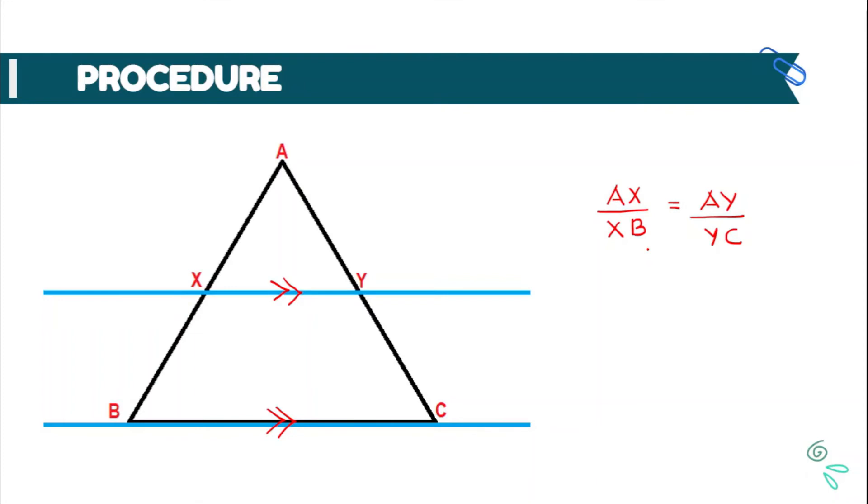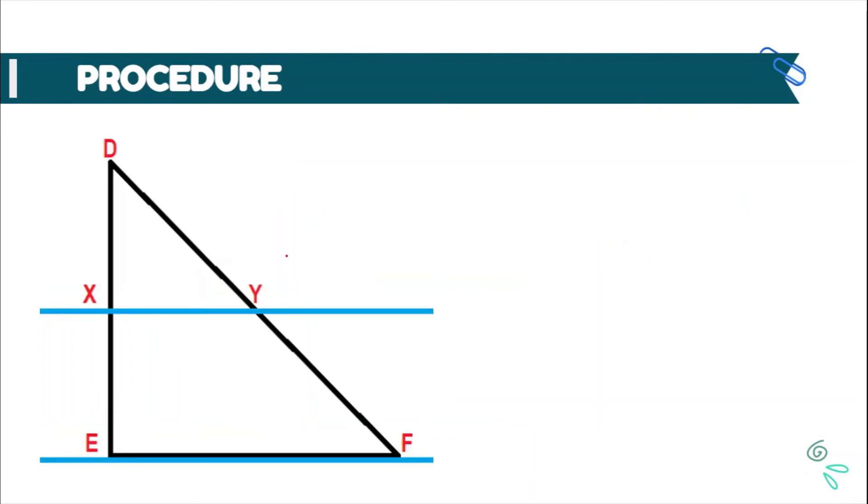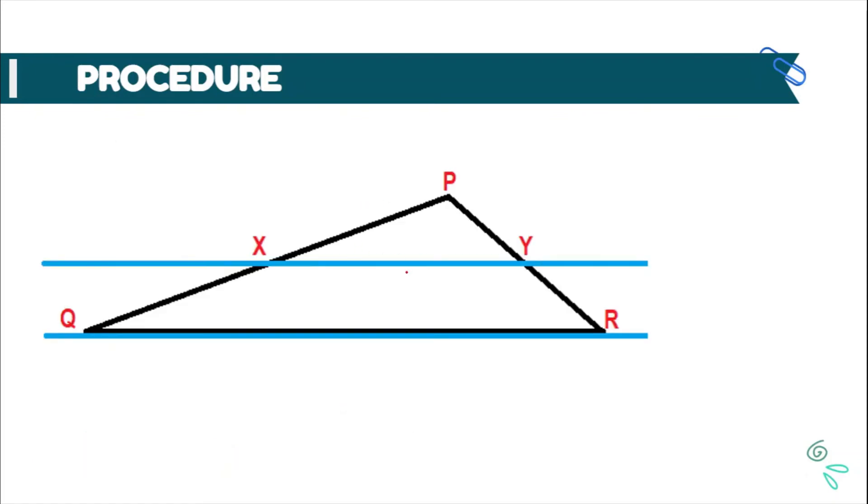Similarly, we will repeat this step for the second triangle DEF. Here again, XY is parallel to EF. And similarly, for the third triangle PQR, here again, XY is parallel to QR. Now, after doing all this, let us tabulate our observation in this manner.